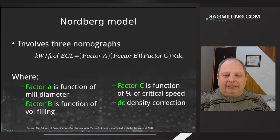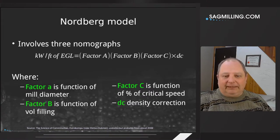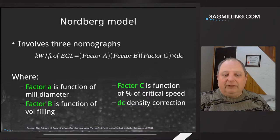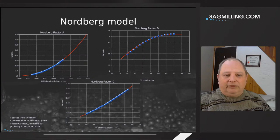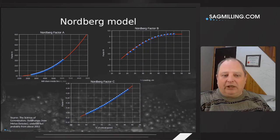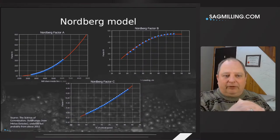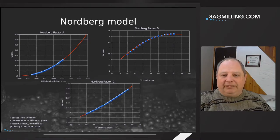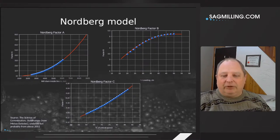The Nordberg model is similarly empirical, based on a bunch of measurements, but it boils down to three nomographs and a density correction. You've got factor A based on mill diameter, factor B based on volume filling, and factor C as a function of speed. Back in the day you could literally read off the diameter, read up, read across — there's your factor A. Same thing for factor B: find your filling, read up, read across, there's factor B, and you just multiply them together.